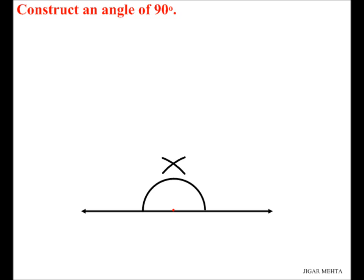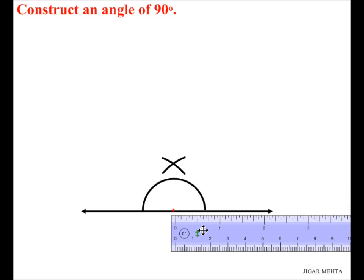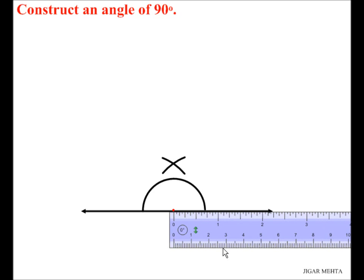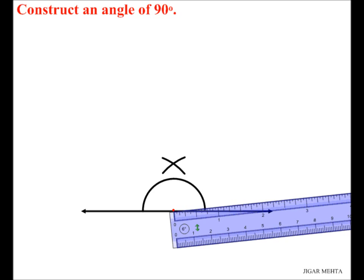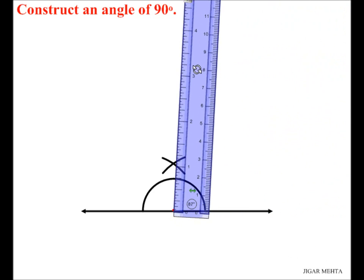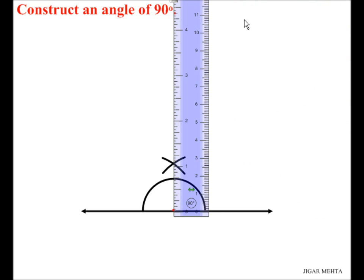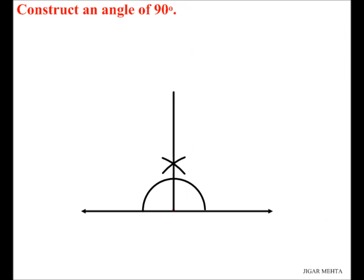And I'm going to use a ruler to join the point I marked on the line and the new point that I've got. So here you go, and let me draw a straight line here. Let me put an arrowhead here.